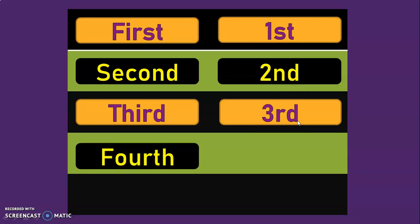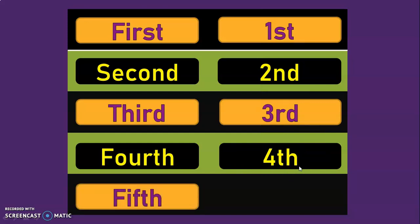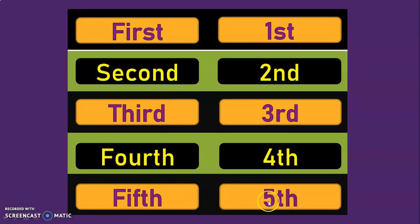The next ordinal number is fourth — F-O-U-R-T-H. The numeral corresponding to this is 4 followed by TH, giving us 4th. The next ordinal number is fifth — F-I-F-T-H. The numeral corresponding to this is 5 followed by TH, giving us 5th.